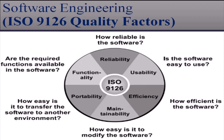Functionality means whether the required functions are available in the software. Reliability means how reliable is the software. Usability means is the software easy to use and easy to learn. Efficiency means how efficient is the software in terms of time and resource behavior. Maintainability means how easy it is to modify the software. And portability means how easy it is to transfer the software to another environment. All these factors are shown in this figure.